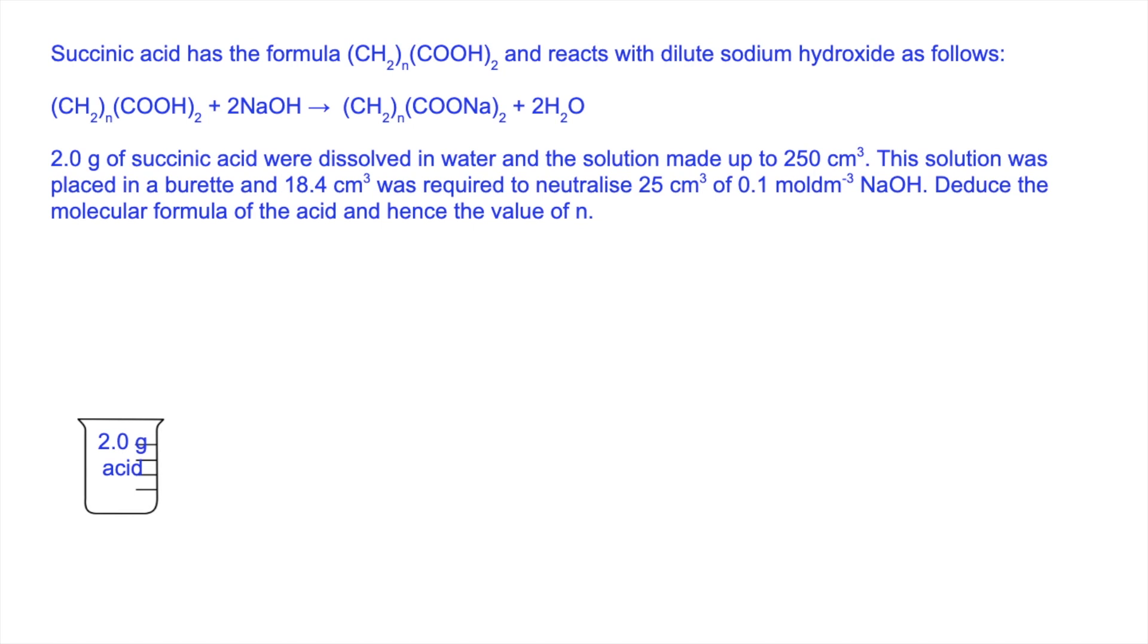As before, I'm going to use some little pictures to help explain what's going on. The 2 grams of acid is dissolved in some water, made up to 250 in a volumetric flask. Then this time it's going into the burette, and the titration is carried out on 0.1 mole per decimeter cubed sodium hydroxide. That's in the conical flask.